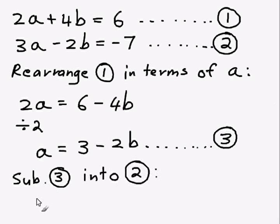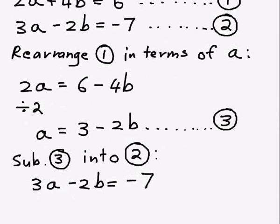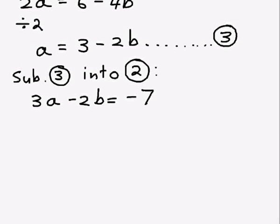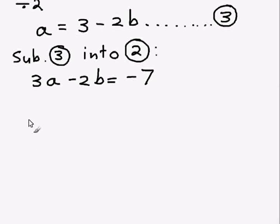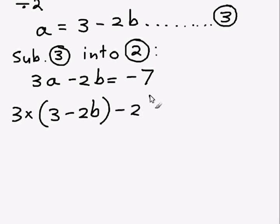So it's good to tell your marker what you're doing. So I'm substituting 3 into 2. I'm going to rewrite equation 2: 3a minus 2b equals minus 7. And now instead of a I can substitute in 3 minus 2b. So instead of a I'm going to write 3 minus 2b. Then I've still got the other minus 2b, and that's going to equal negative 7.